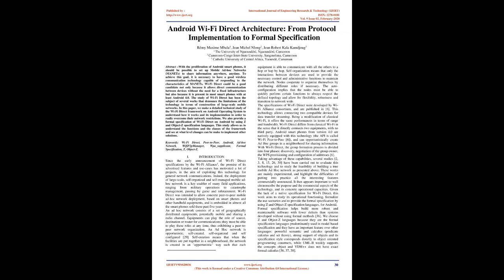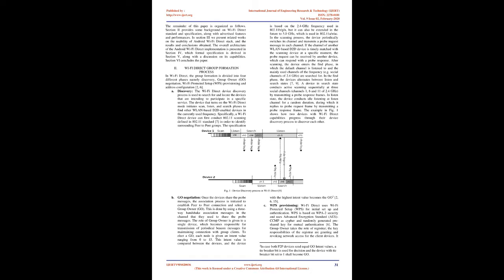Wi-Fi Direct allows connecting two compatible devices for data transfer and streaming. Being a modification of classical Wi-Fi, it offers the same performance in terms of range and bandwidth. Wi-Fi Direct differs from classical Wi-Fi in that it directly connects two equipments with no third-party. Android smartphones from version 4.0 are natively equipped with this technology; the API is called Wi-Fi Peer-to-Peer, and can opportunistically create ad hoc groups in a neighborhood for sharing information. With Wi-Fi Direct, the group formation process is divided into four phases: discovery, negotiation of the group owner, WPS provisioning, and configuration of addresses.